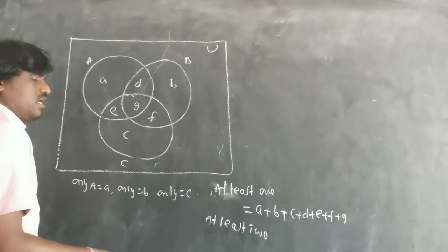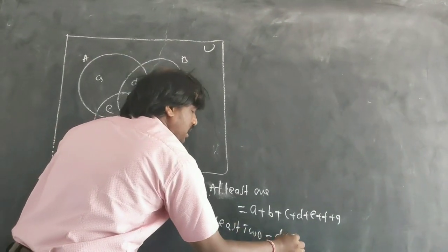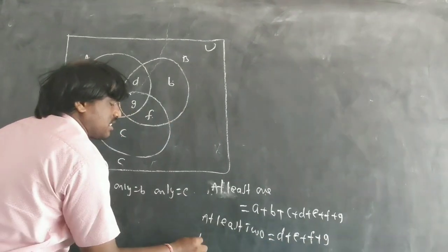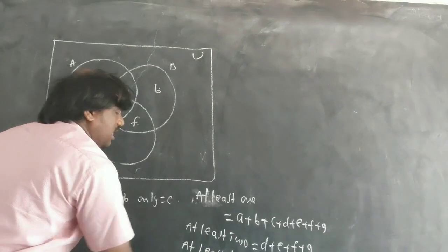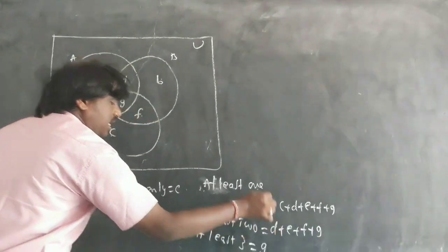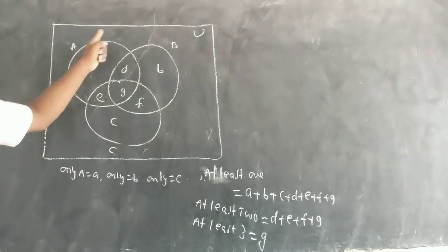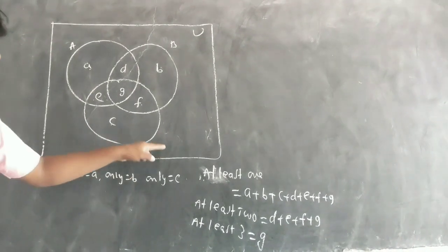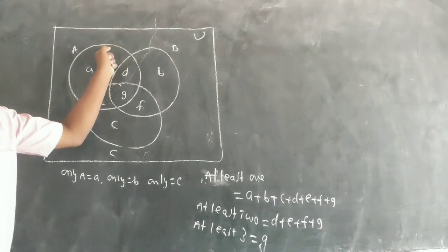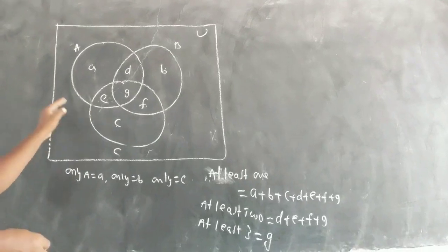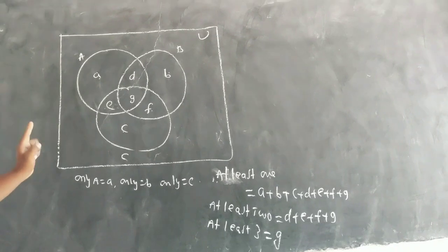At least three in this case is just G — only the region where all three sets overlap. I missed this point in the previous lecture where I explained only A, only B, only C, A and B, A and C, A and B but not C — everything I explained.